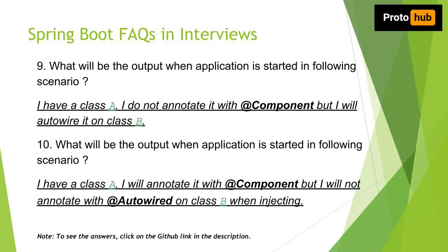Question number nine is: what will be the output when the application is started in the following scenario? I have a class A, I do not annotate class A with @Component, but I will auto-wire class A on class B. Question number ten is: what will be the output when the application is started in the following scenario? I have a class A, I will annotate class A with @Component, but I will not annotate with @Autowired on class B when injecting class A.